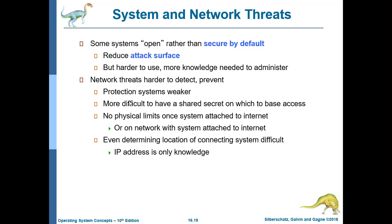Network threats are harder to detect and prevent because protection systems are weaker, it is more difficult to establish a shared secret for access, there are no physical limits, and determining the location of a connecting system is difficult — an IP address is the only knowledge with which you can track a system's location.